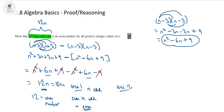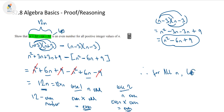In case 2, when n is even, we've got 12 — our even number — times an even number. Even times even is also an even number. So we've proved that for all n, our expression will always be even. And there we have it — we've proven this result.